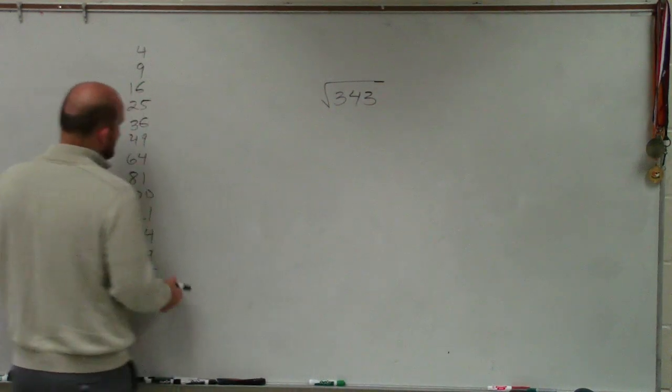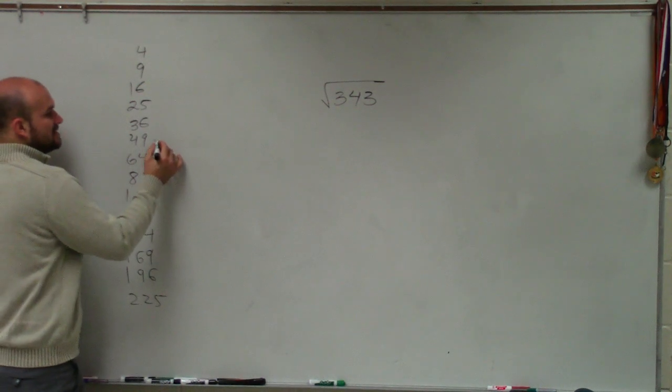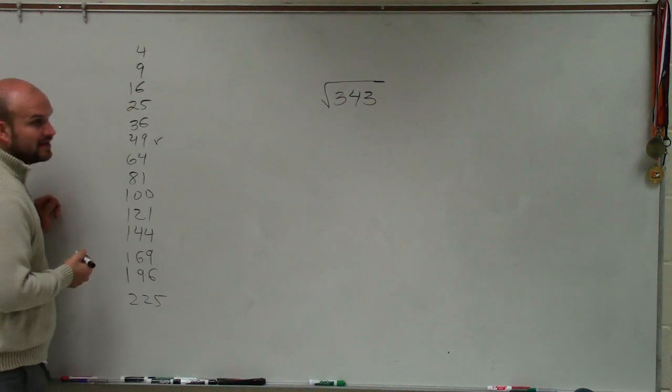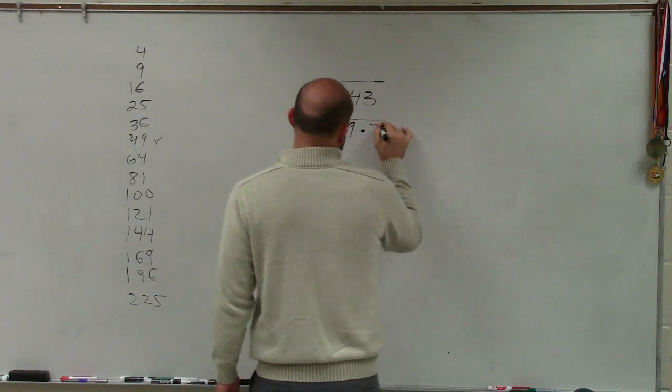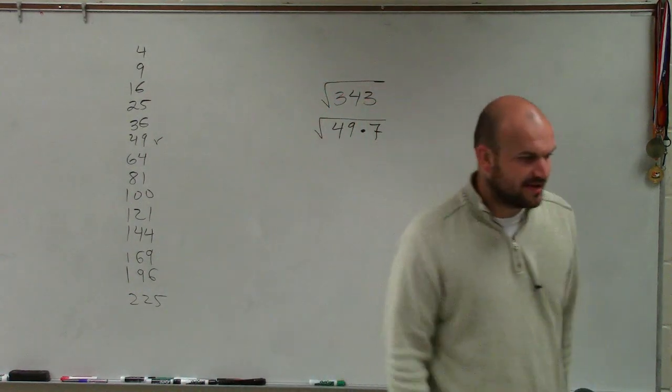But as you keep going through that, what we see is we have a solution at 49, which I can rewrite this as square root of 49 times 7.